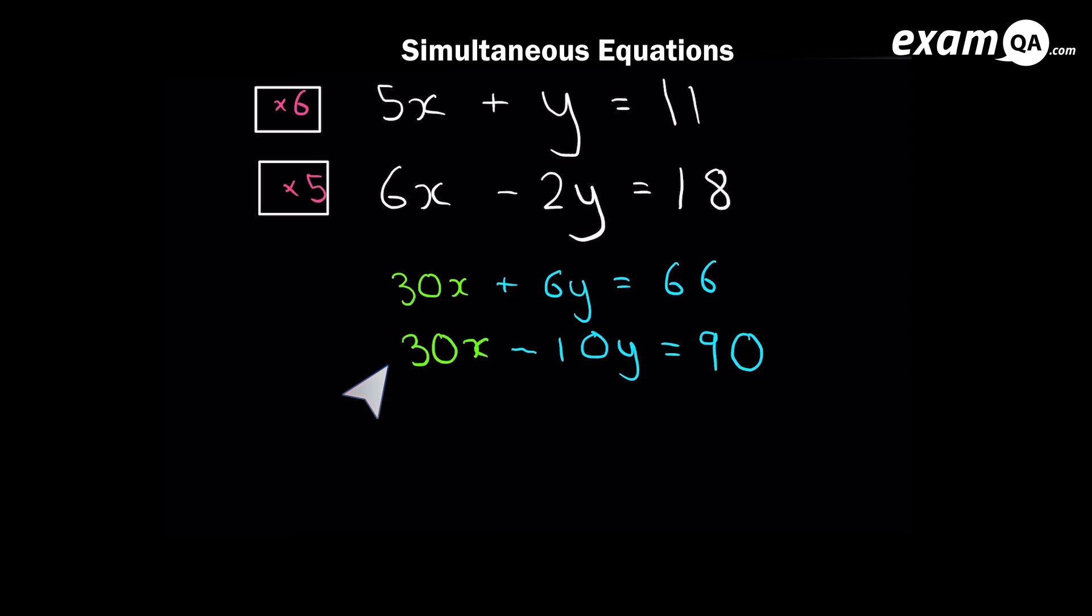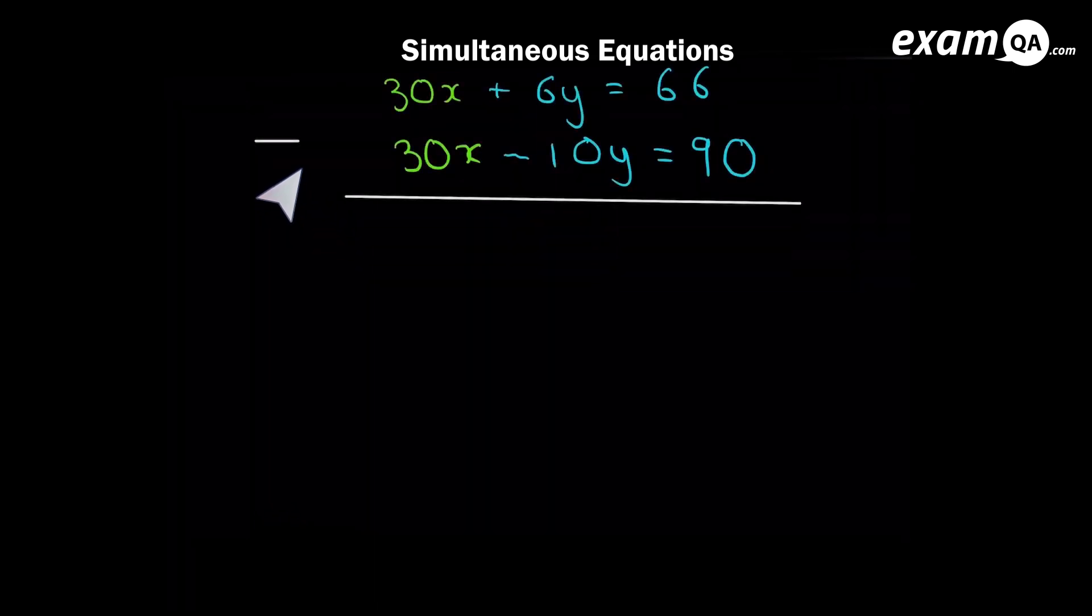It's always the signs which cause mistakes in these type of questions. So as before, we're going to do subtraction. Because that's what we'll get rid of the 30x's. So 30x minus 30x is nothing. So that disappears. And we've got 6y subtract. Or you could say 6y minus minus 10y. Now of course we've got a minus minus situation here. So it becomes 6y plus 10y. Giving us 16y. And we've got 66 minus 90, which is minus 24.